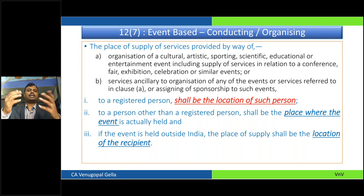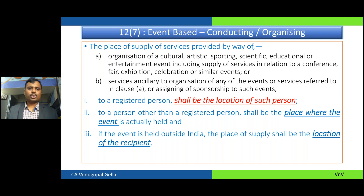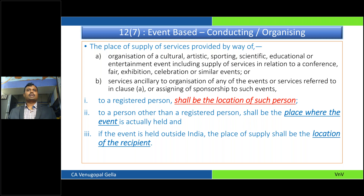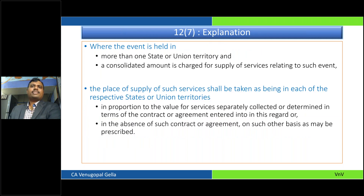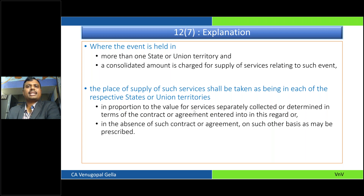So I am from Bangalore, you are in Delhi, I am setting up an event for you in Dubai. As per Section 12(7), it would be location of recipient — Delhi. When the event is held in more than two states, the IGST rules give a mechanism: you should allocate the consolidated amount proportionately to the value of services in each state — based on the contract agreement or, if nothing is there, any other reasonable basis.